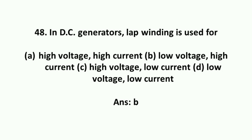In DC generators, lap winding is used for low voltage high current.